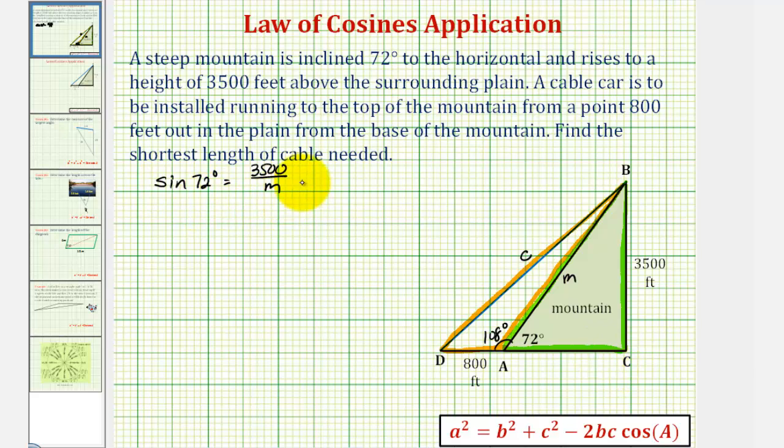And now to solve for M, we would multiply both sides by M, which would give us M times sine 72 degrees equals 3,500, divide both sides by sine 72 degrees.